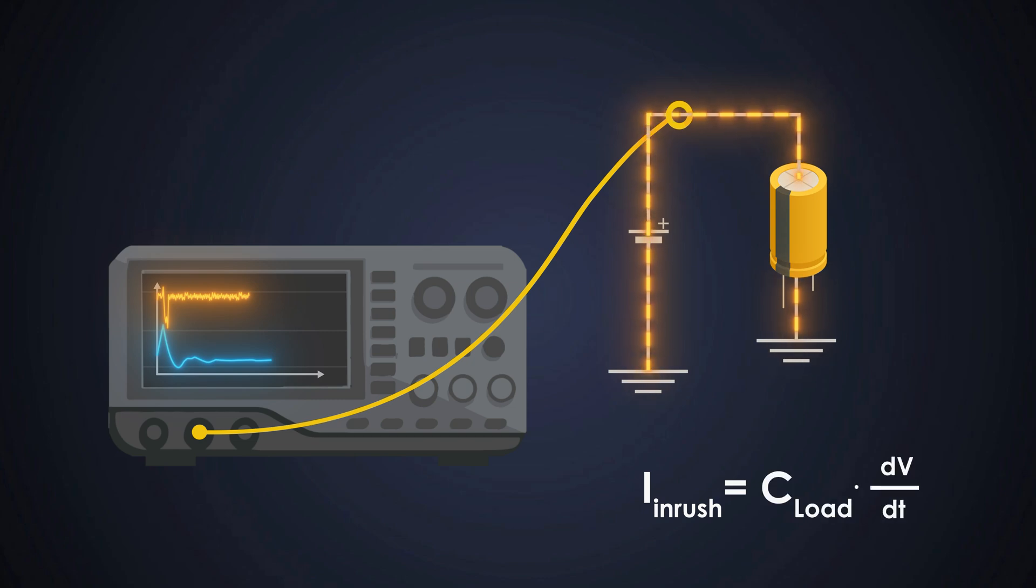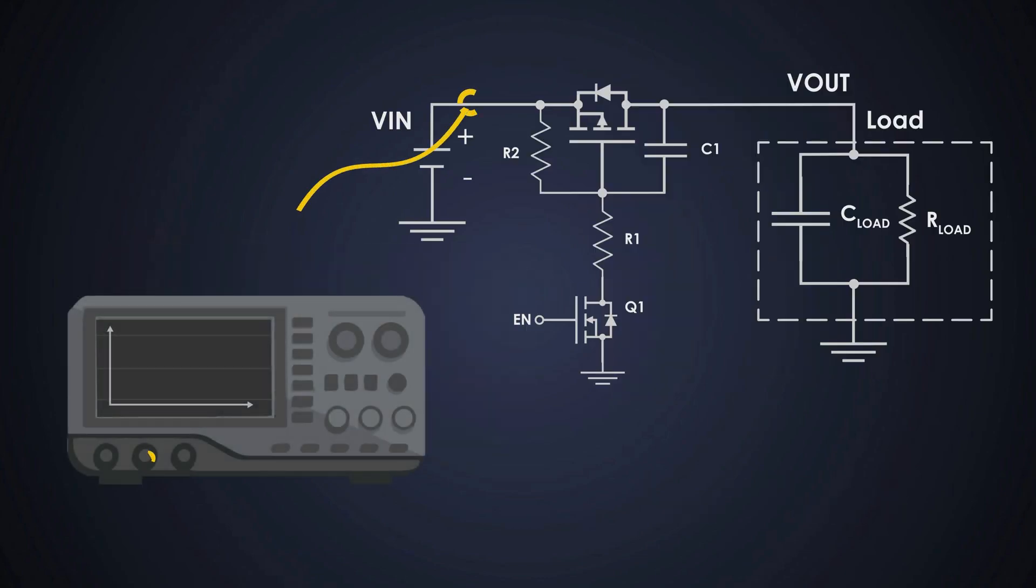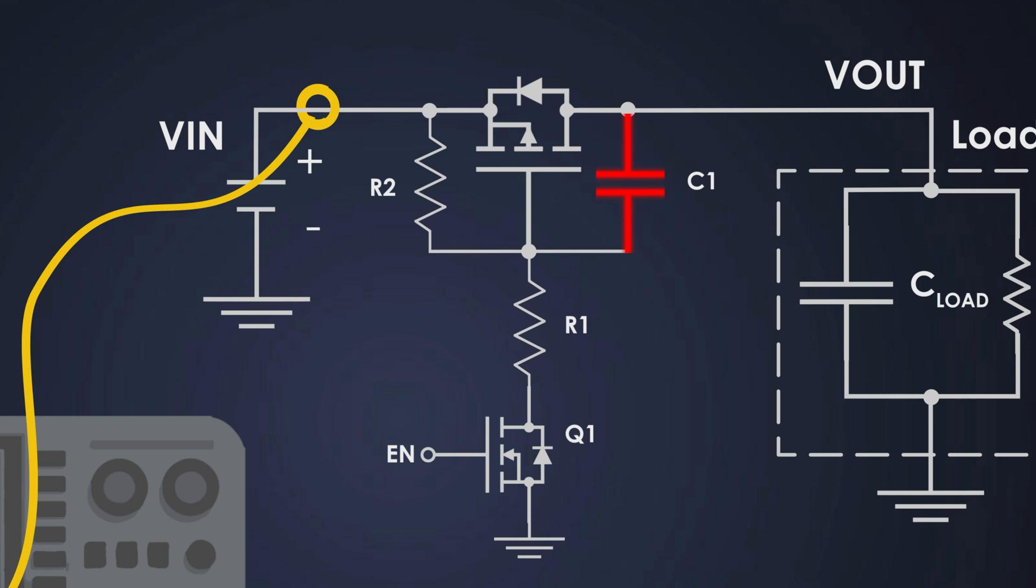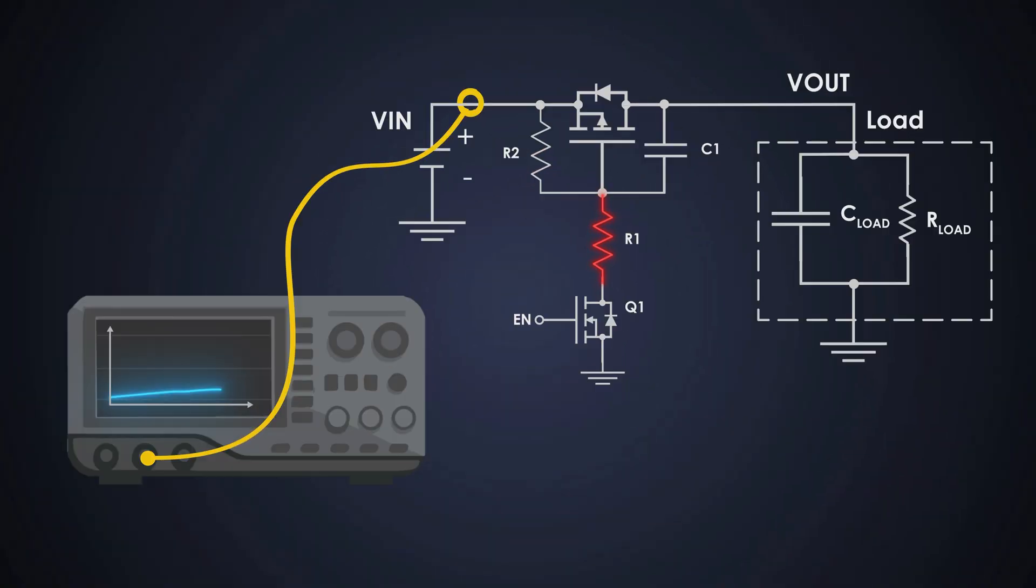So, faster turn on leads to higher inrush. This can be limited by slowing down the gate voltage ramp of the P-channel MOSFET. For that, C1 needs to slow down the gate transition between gate and source. R1 and R2 need to control the gate discharge current and voltage divider. And Q1 should turn on or off based on the logic enabled signal.